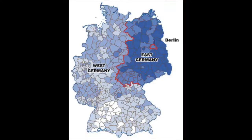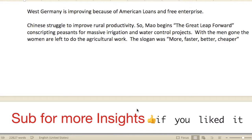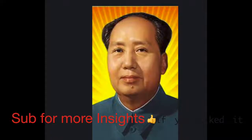People from East Germany are fleeing to West Germany, as there is no Berlin Wall at this time. West Germany is improving because of American loans and free enterprise, and that's the reason why people were choosing to go over to the West side of Germany.